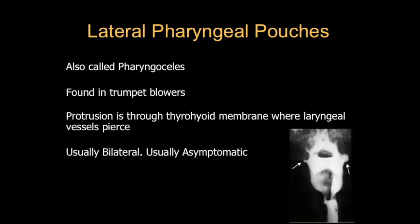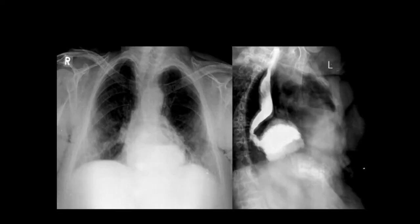The next case shows two small outpouchings on either side along the lateral aspect of the pharynx — these are lateral pharyngeal pouches or pharyngoceles. They are usually found in trumpet blowers and are asymptomatic, representing protrusion of pharyngeal mucosa through the thyrohyoid membrane where laryngeal vessels pierce. They are usually bilateral and most often asymptomatic.